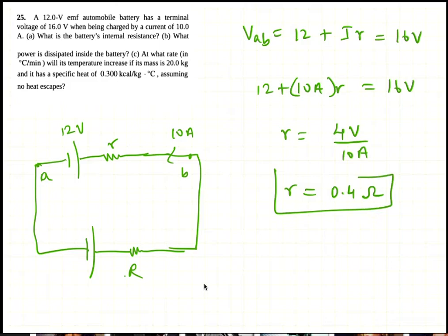What power is dissipated inside the battery? The power dissipated inside the battery is I squared R, which is 10 amps squared times 0.4 ohms, which is 40 watts.